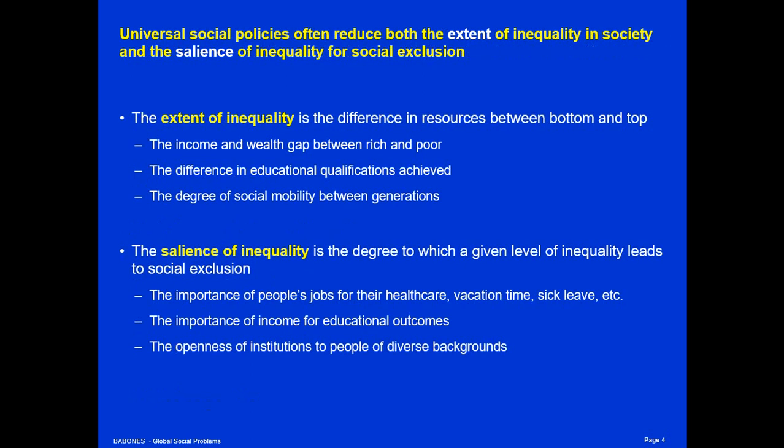These universal social policies often reduce both the extent of inequality in society and the salience of inequality for social exclusion. The extent of inequality is the difference in resources between bottom and top — people have different incomes, some people inherit wealth while others don't, some people inherit houses while others have to buy from scratch. The difference in educational qualifications and the degree of social mobility between generations are massive inequalities. Universal social policies tend to reduce the extent of inequality by giving everybody the same resources so that people's initial position in society just doesn't matter as much.